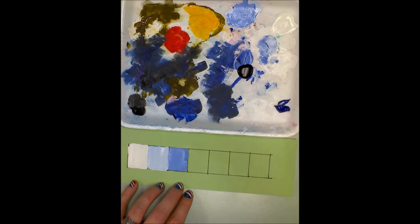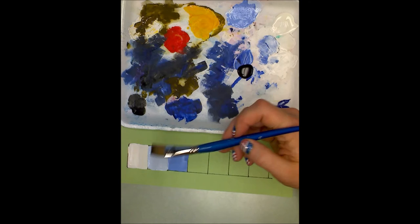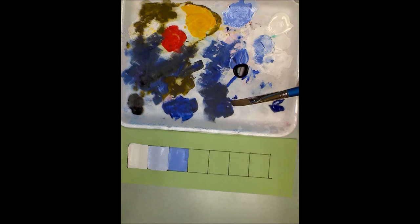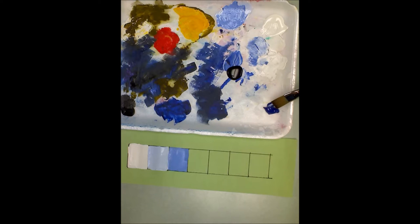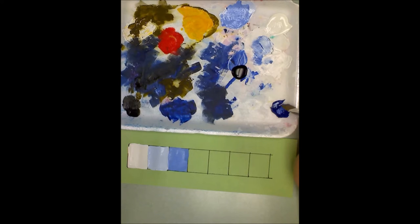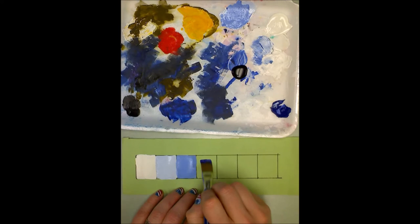Okay now just how I did before where I took the white and I started with it and then I added a little bit of blue each time. I'm going to do the same thing but I'm going to start with blue and add a little bit of black each time. So I'm going to take my blue here, my solid blue and paint that in.